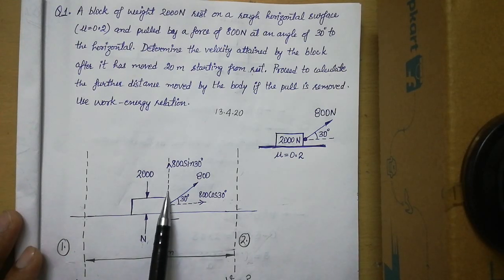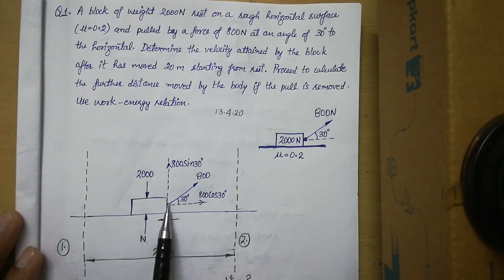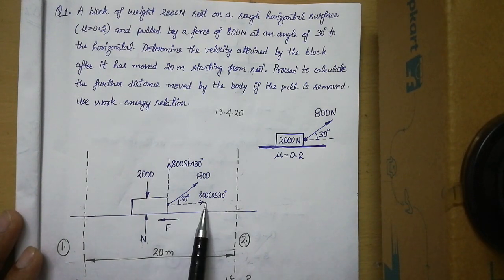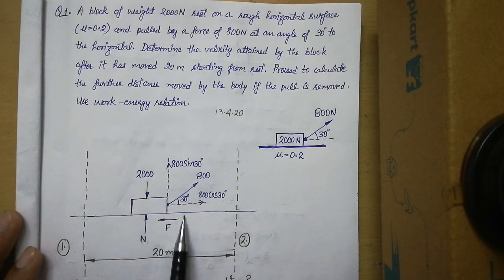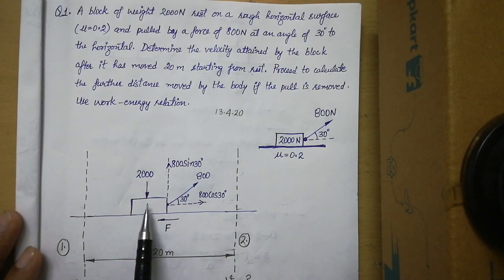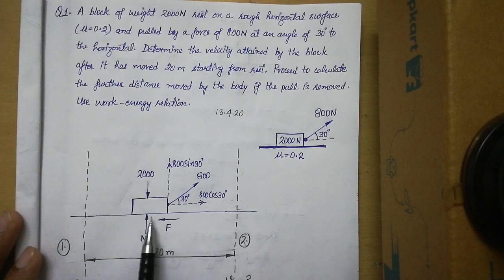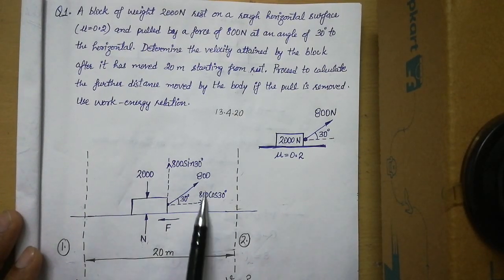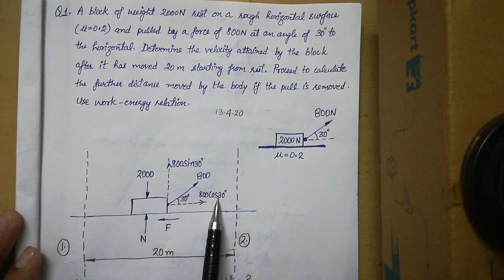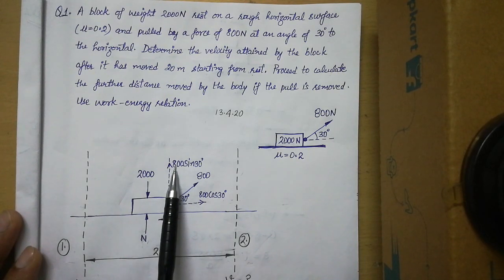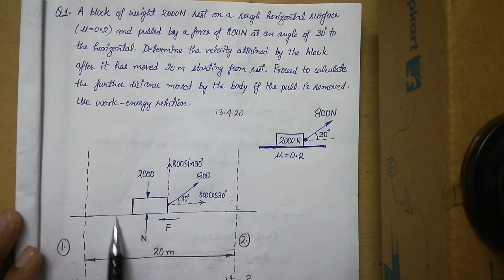Since the force acts at an angle to the horizontal, one component will be along the horizontal and another along the vertical. Taking the angle with the horizontal, the horizontal component is 800 cos 30 and the vertical component is 800 sin 30. The frictional force is also represented — since motion is towards the right, the frictional force acts towards the left.